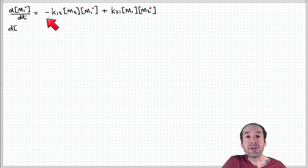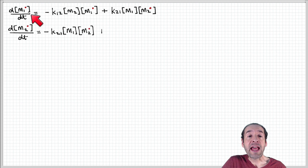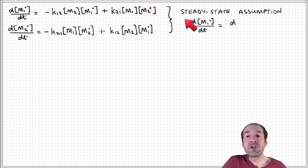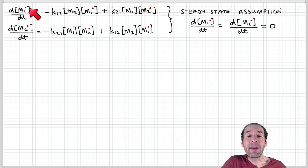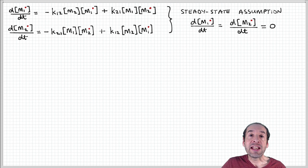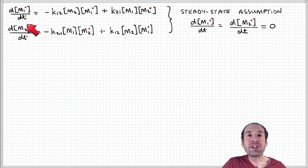Now that we have an equation for the net rate of production of active chains — chains that have the active site associated with monomer 1 and monomer 2 — we're going to make what's called a steady state assumption. What we're saying is that the concentration of these active chains ending in monomer 1 and monomer 2 is relatively constant, meaning the rate of change with respect to time of their concentrations is equal to zero. This is essentially a reasonable assumption throughout the majority of the polymerization process.